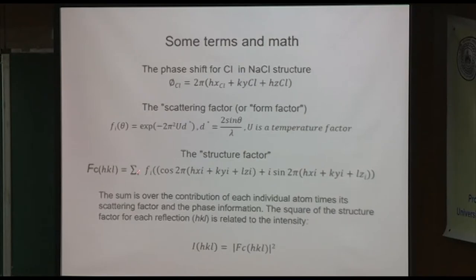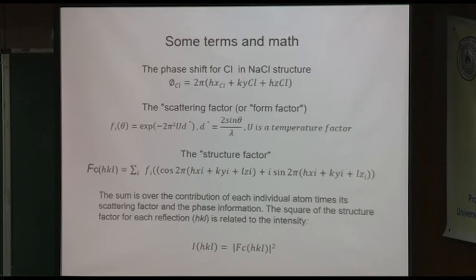The structure factor equation is the sum over all atom positions X, Y, Z for the i-th atom, and there's actually a real part and an imaginary part. The early crystal structures that were solved were all centrosymmetric because they couldn't deal with the imaginary part. Centrosymmetric structures do not have the imaginary parts — much easier mathematically. The observed structure factor is the square root of the observed experimental intensity.